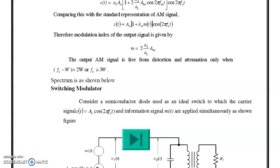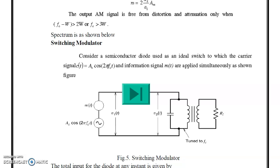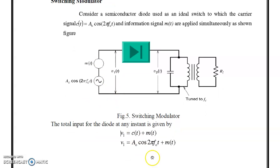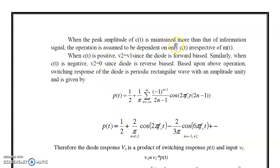The second method is the switching modulator, which uses a diode for AM signal generation. The diode is considered as an ideal switch — it is either on or off. The input V1 = Ac·cos(2πfc·t) + m(t). The peak amplitude of the carrier is maintained greater than that of the message signal, so the diode operation is assumed to depend on the carrier signal irrespective of the message signal. When the diode is forward biased, V2 = V1; when reverse biased, V2 = 0.